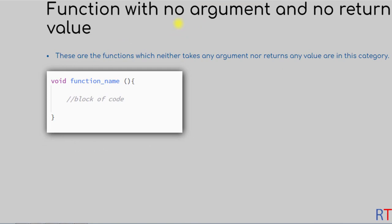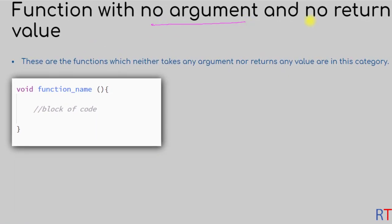First we're going to talk about functions with no argument and no return value. These functions neither take any argument nor return any value. We leave the parameter section blank to denote that the method will not take any argument, and we use the void keyword in the return type to denote that it will not return any value.